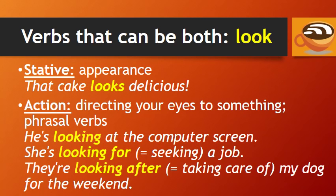'Look' is another verb that can be both stative and an action. Look is a stative verb when referring to something's appearance — for example, 'that cake looks delicious.' Look is an action verb when talking about directing your eyes to something, or in phrasal verbs. For example, 'he's looking at the computer screen,' 'she's looking for a job,' meaning seeking, and 'they're looking after my dog for the weekend' — looking after means taking care of.